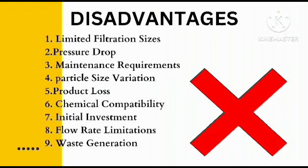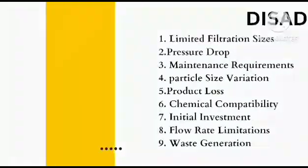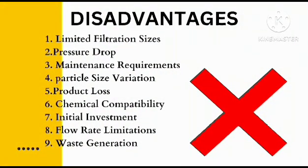The sixth limitation is chemical compatibility. SITS filters may not be suitable for all types of liquids or chemicals, as compatibility with the filter materials must be considered. Next is initial investment: depending on the size and configuration, the initial investment in SITS filter equipment can be relatively high. The eighth limitation is flow rate — the flow rates that SITS filters can handle are limited, so they may not be suitable for high flow applications without multiple filter units. The last limitation is waste generation: disposal of used filter media can be a concern, especially in applications with hazardous materials.